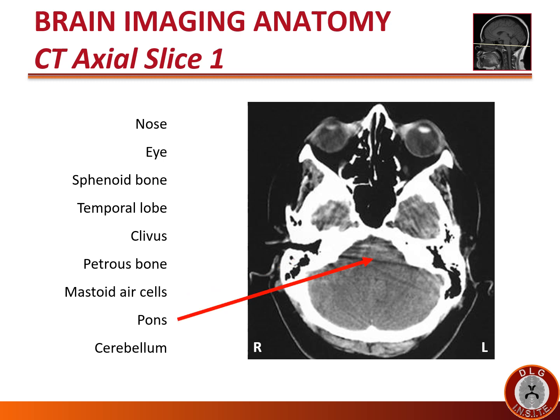The pons is seen in the center of this slice. Remember, the word pons means 'bridge' in Latin, and it bridges the two other components of the brainstem — the medulla below it and the midbrain above it. When you see the pons on an axial image, behind it lies the cerebellum. Please also note that the cerebellum crosses the midline; there is no fissure between the two sides of the cerebellum.